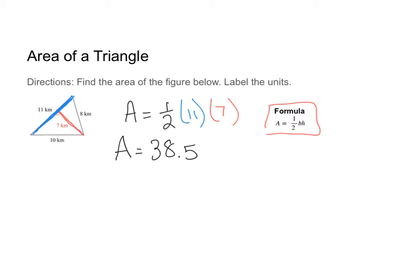Now the instructions say to label the units, we are using kilometers. Now area means all that space inside a figure or shape. So everything that's green in here is the space inside the triangle. That's the area. And whenever we're talking about area, we square our units. So we're talking about kilometers squared as my labeling of units.